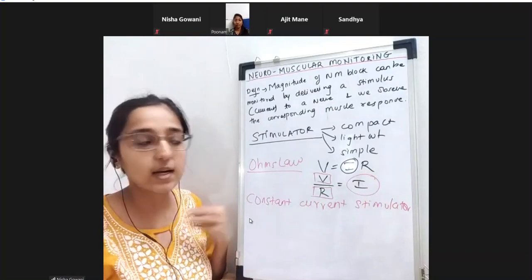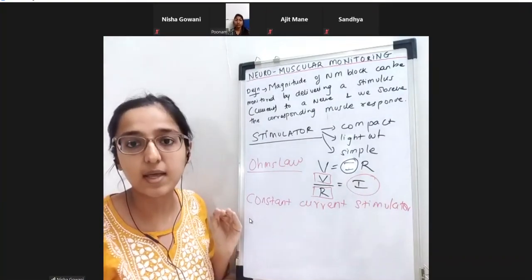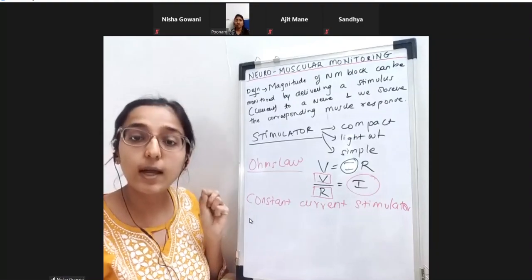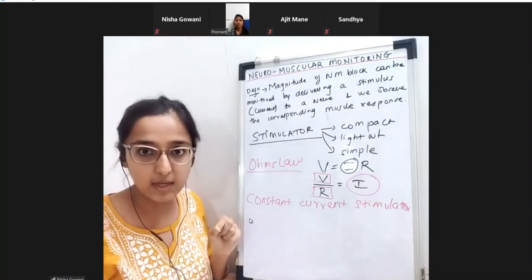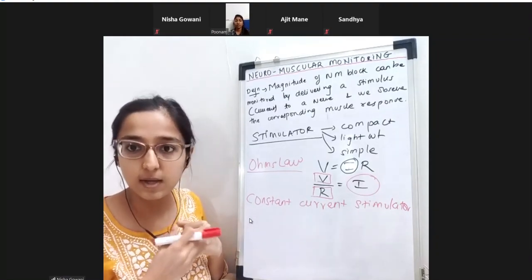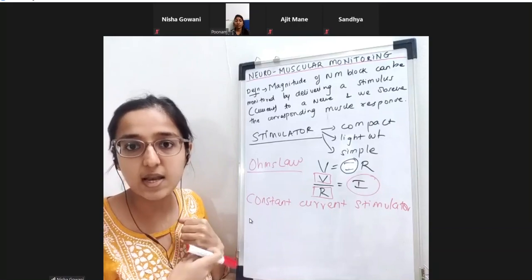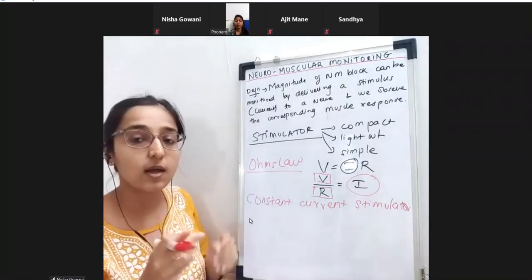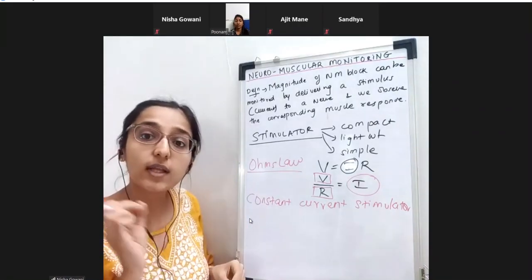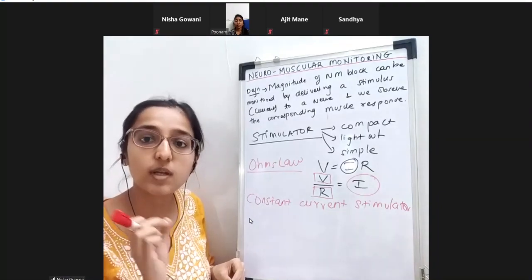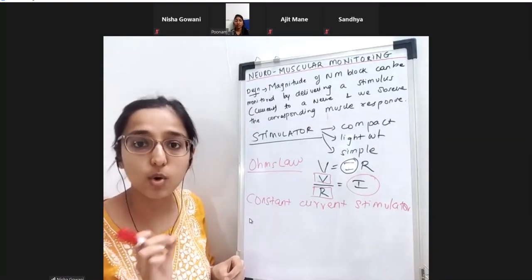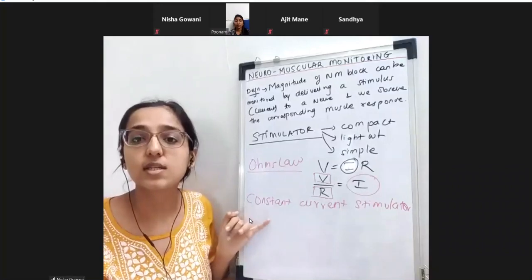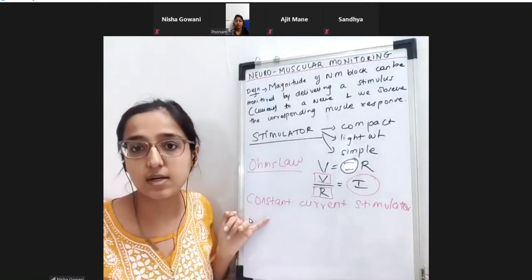If I select 20 mA on the nerve stimulator, it will give 20 mA. It will sense the resistance offered by the skin and tissues, alter the voltage accordingly, and ensure that 20 mA only gets delivered - not more, not less. The stimulator we are using is a constant current stimulator and it follows Ohm's law.